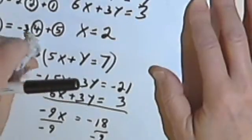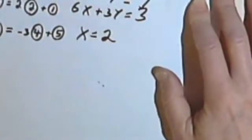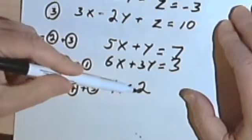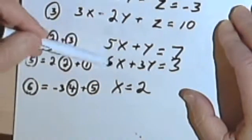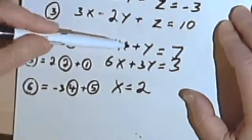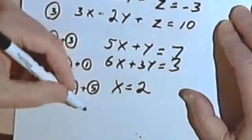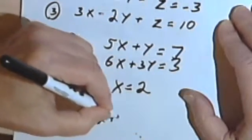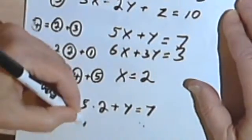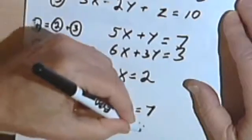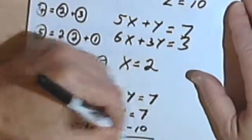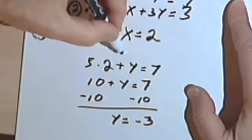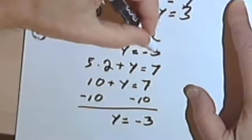So equation number 6, x equals 2, is actually one of my answers — it's one of the solutions to my problem. From here on out, everything gets very easy. All I have to do is take x equals 2 and substitute it into either one of the equations with two variables. So I'm going to pick 5x plus y equals 7. So instead of 5x plus y equals 7, I'm going to have 5 times 2 plus y equals 7. 5 times 2 is 10, plus y equals 7. Subtracting 10 from both sides, I end up with y equals negative 3.